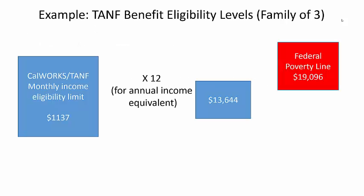In California, for example, income for a family of three must be below roughly $1,137 per month to be eligible for TANF, or CalWORKs, as the TANF program is known in California. This monthly income amounts to less than 75% of the federal poverty threshold for a family of three.